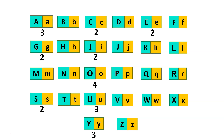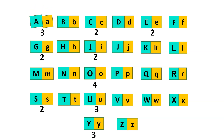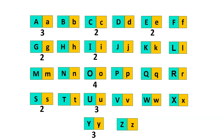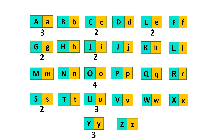Here I have given some numbers below some letters. That number shows the number of phonic sounds of that letter. Some letters don't have a number, it means that letter has only one sound. Phonic sound of letter A is A, A, and A. Phonic sound of letter B is B. Phonic sound of letter C is S and K. Phonic sound of letter D is D. Phonic sound of letter E is E and A. Phonic sound of letter F is F. Phonic sound of letter G is G and J.